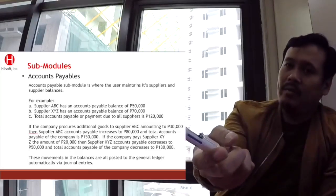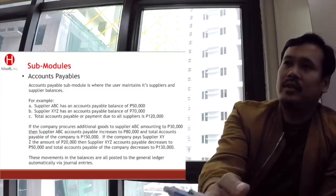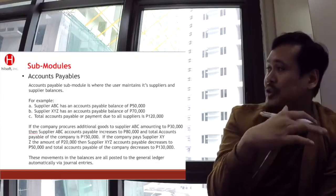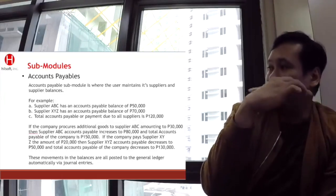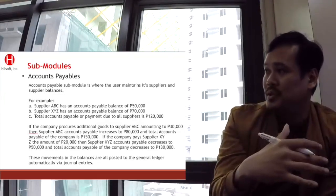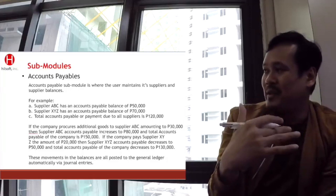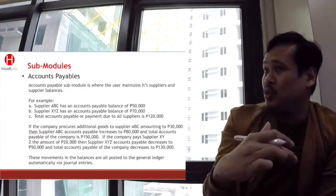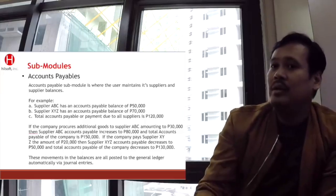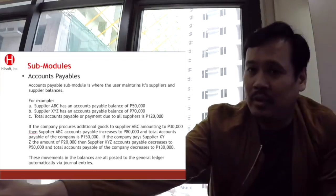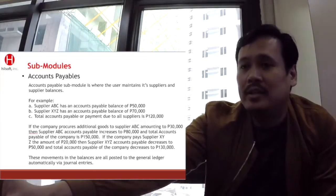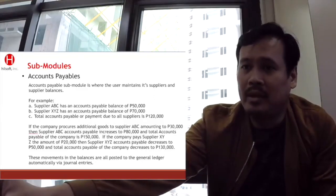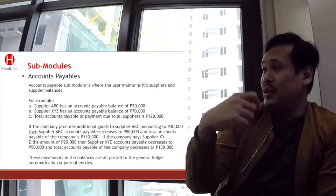In regards to accounts payable, the basic transaction is the billing set-up or the accounts payable voucher — also called the accounts payable memo or credit memo. A payable credit memo increases the value of your payable. For example, if the company procures additional goods from a supplier amounting to 30,000, the payable will increase to 80,000, if there are terms.